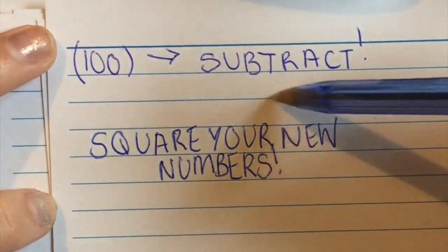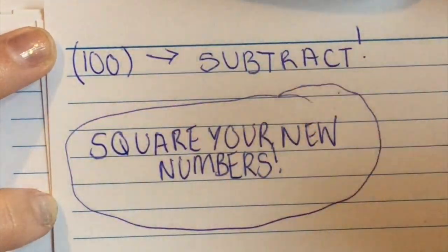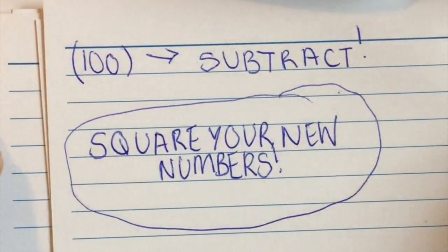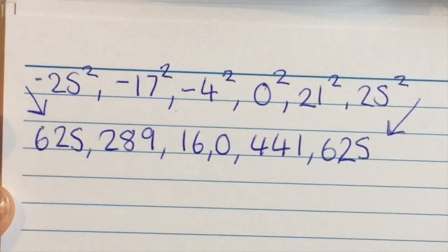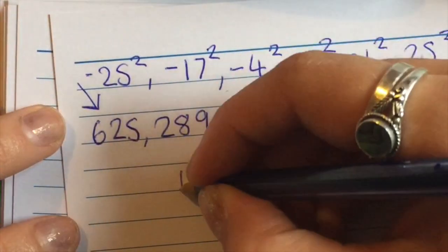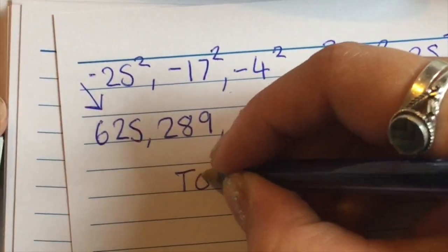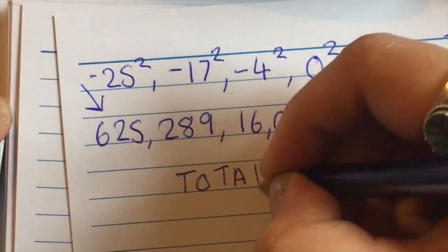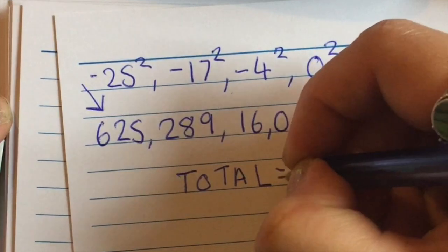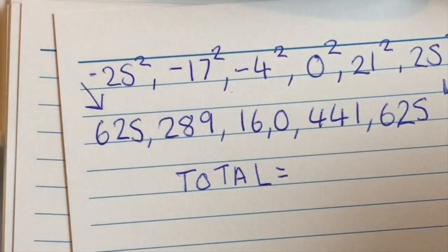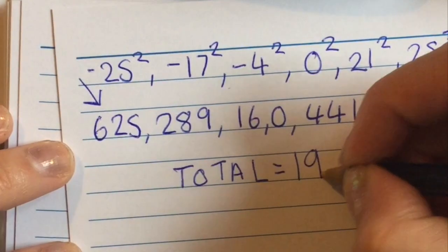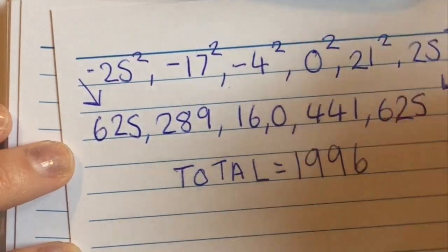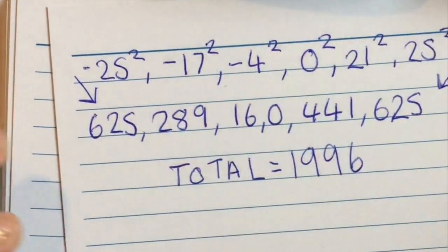Now you're going to square your new numbers. This is another really important step. I've skipped showing it because it's tedious, but with a calculator you're fine. They will all be positive numbers because squaring a negative gives a positive. Now get the total of all your squared numbers, which in this case is 1,996.